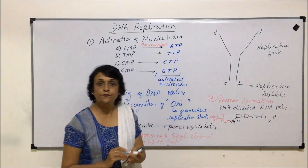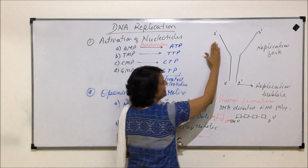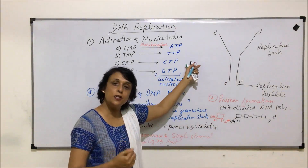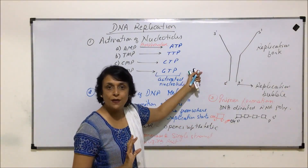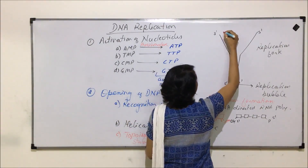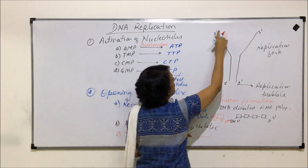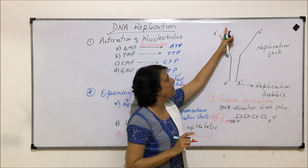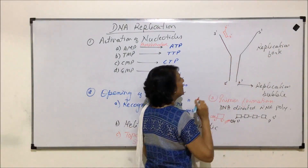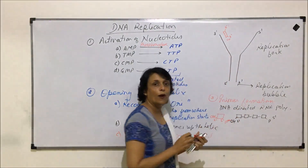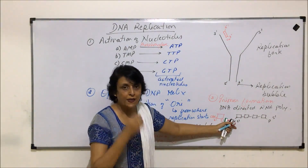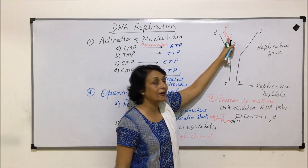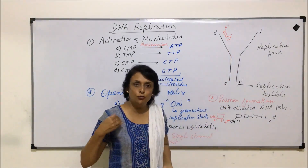For the parent strand running 3 prime to 5 prime, the RNA primer is placed at the 3 prime end of that template, with the primer's 5 prime end adjacent to it and its 3 prime OH free for extension. New nucleotides then come and bind at that 3 prime OH, growing the new strand in the 5 prime to 3 prime direction. For the strand running 5 prime to 3 prime, the primer must be placed at the base of the opened-up fragment, again in front of the 3 prime end of the template.